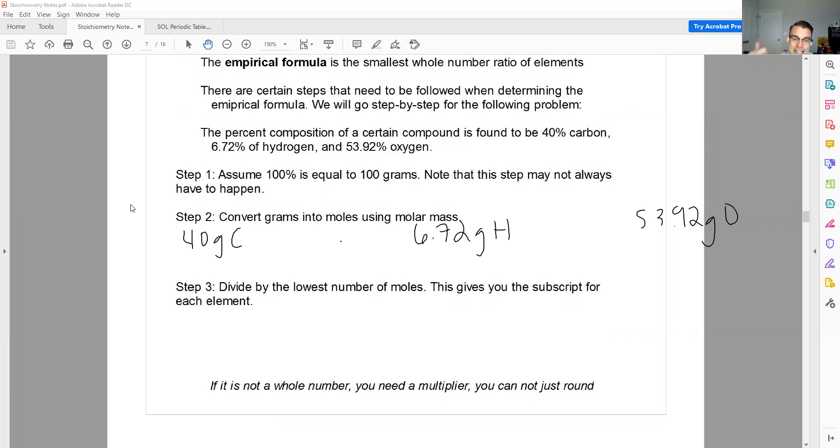Step two, convert those into moles. Take your grams, turn them into moles. Just go out a few. Okay, so when you're doing empirical and molecular formulas, go out a few decimal places. It doesn't matter for our sig figs in this, but the more decimal places, the better your answer is going to be. So please keep that in mind. For hydrogen, it's going to be 6.67 moles. Oxygen gives me 3.37 moles.